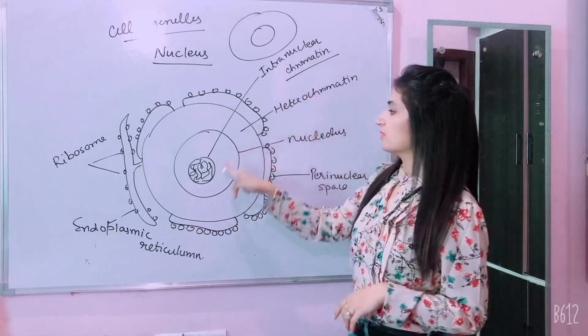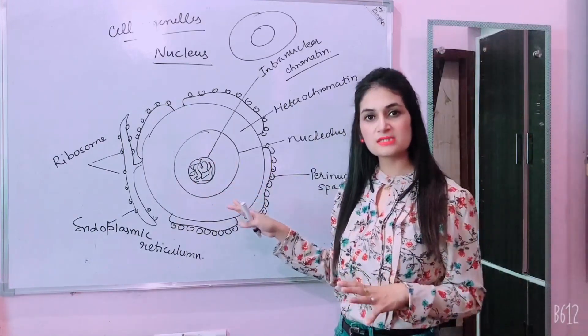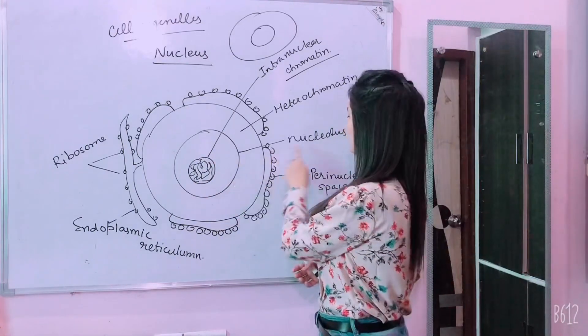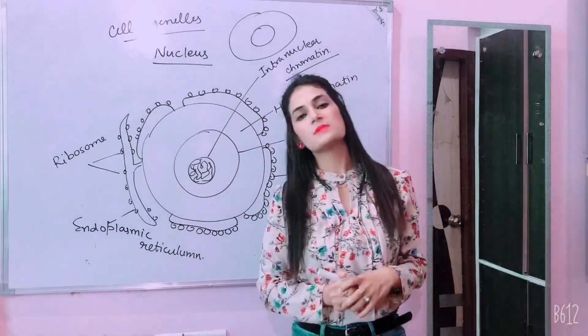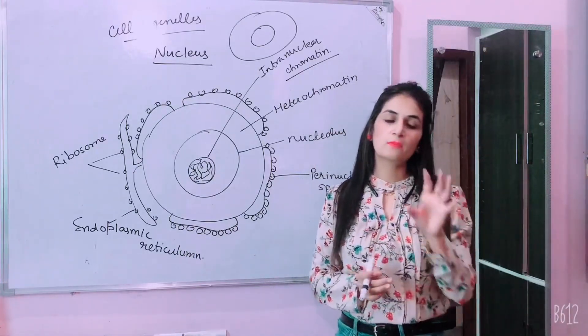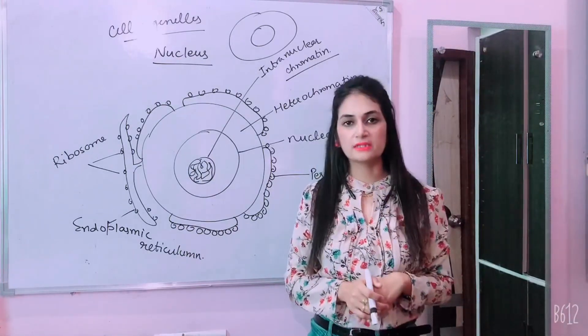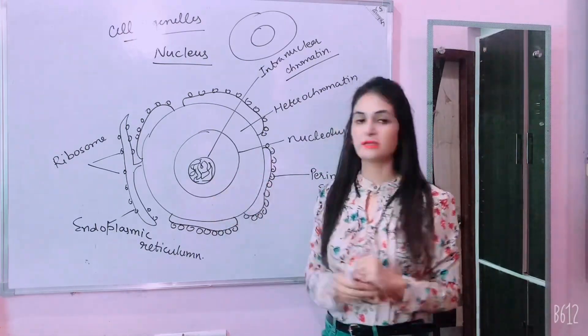So intranuclear chromatin is in the center of the nucleus. Then, the nucleolus is in the center of the nucleus. This is a spherical dark stain. Dark stain means that if you can see it from the electron microscope under the cell, you will see the dark stain. What is chromatin material in that dark stain?